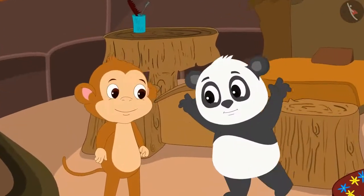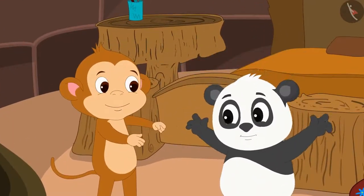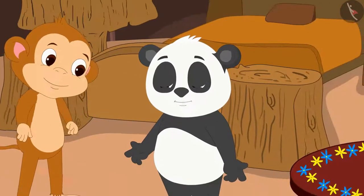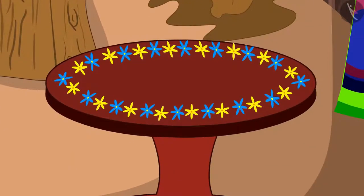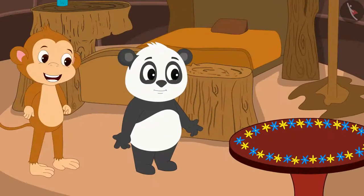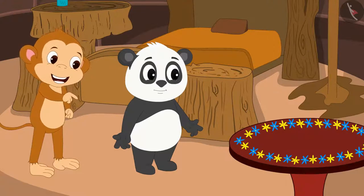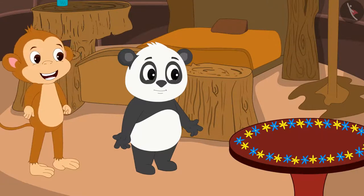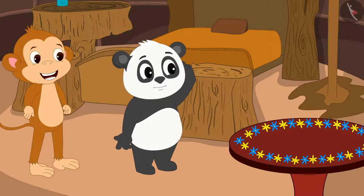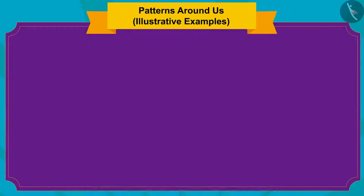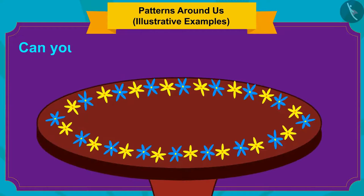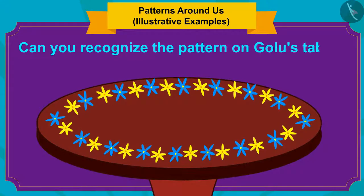Golu and Babban are playing at Golu's house. Suddenly, Babban's gaze went to Golu's table. Babban immediately called Golu and said, 'Look! This is such a beautiful pattern that you have made on your table, Golu!' Golu is unable to recognize patterns. Kids, can you recognize the pattern on Golu's table?